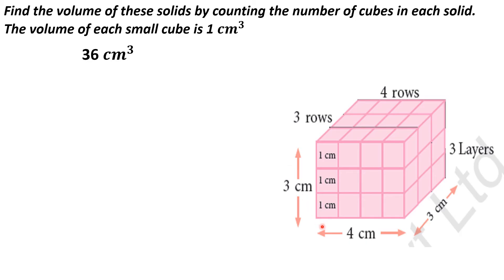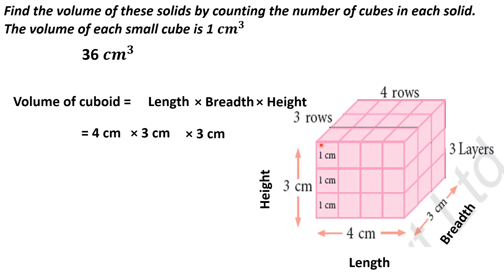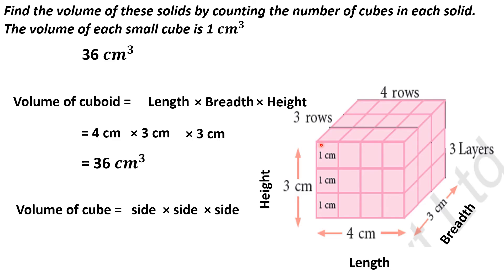Now let us find out the formula. Each small cube has a side of one centimeter. The total length of this cuboid is four centimeters, the breadth is three centimeters, and the height is three centimeters. So the volume of a cuboid equals length × breadth × height. Putting in the values: 4 × 3 × 3 = 36 centimeter cube. For a cube, since all sides are equal, the formula is side × side × side.